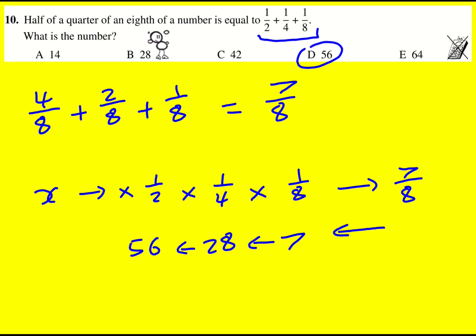Method two, to use algebra. If we've got a half of a quarter times an eighth, if I want to multiply these fractions, I just times the tops and times the bottoms. That's going to give me x over sixty-four. You can imagine writing this as x over one if you want. So this times this times this is x times one times one times one, which is x, and then one times two times four times eight, which is sixty-four. And that is equal to seven over eight.